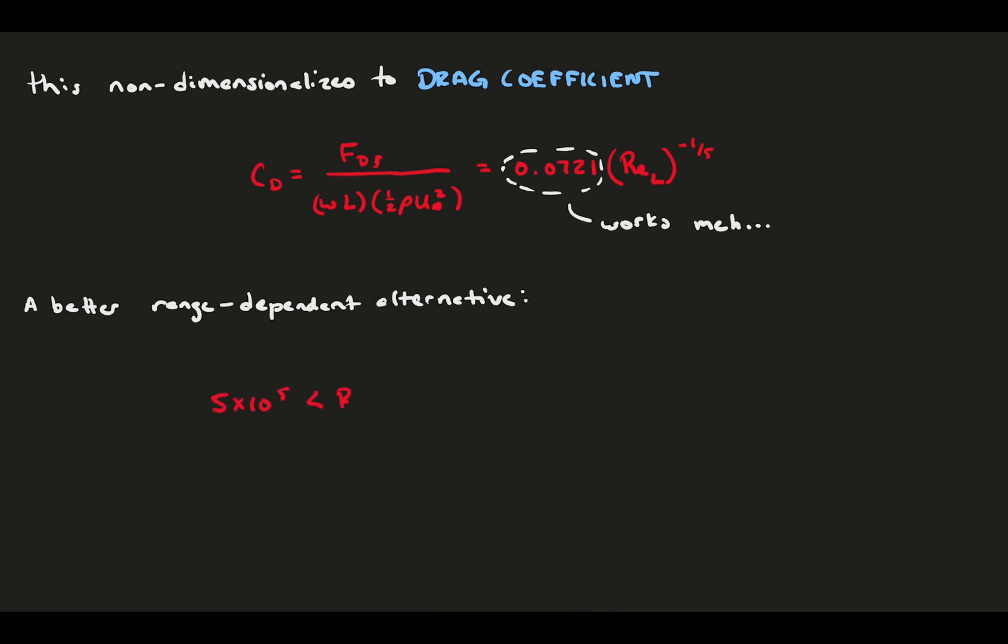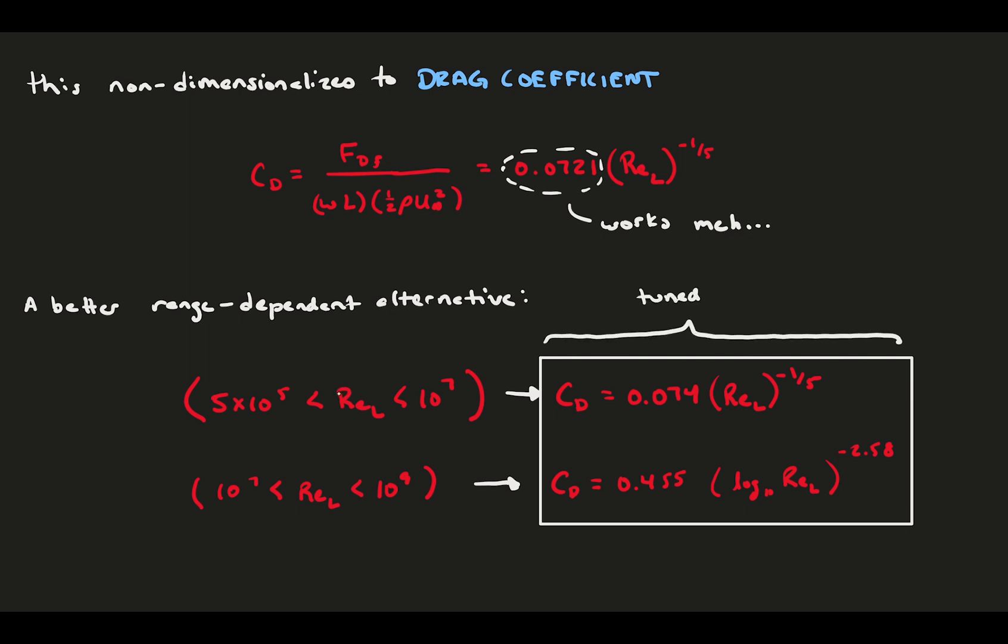We have a range of Reynolds numbers where one relation works. And at a higher Reynolds number, we have a slightly different formula that works better. Depending on your Reynolds number, you would look at what range you were in and you would find the best relations to define your flow drag.